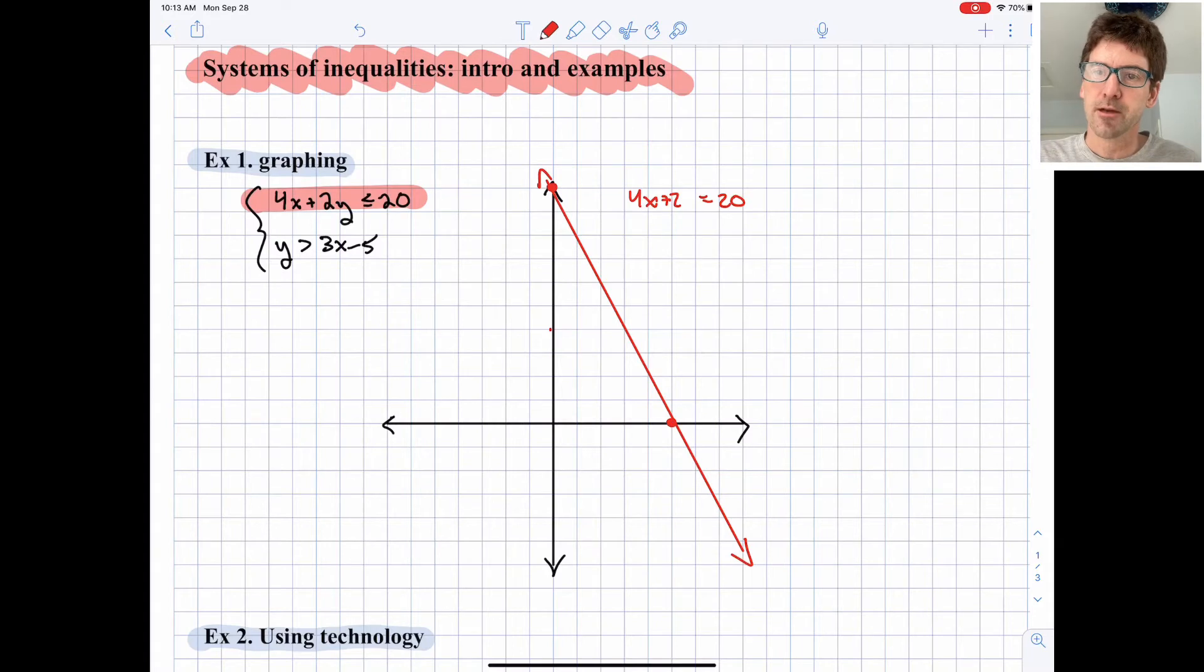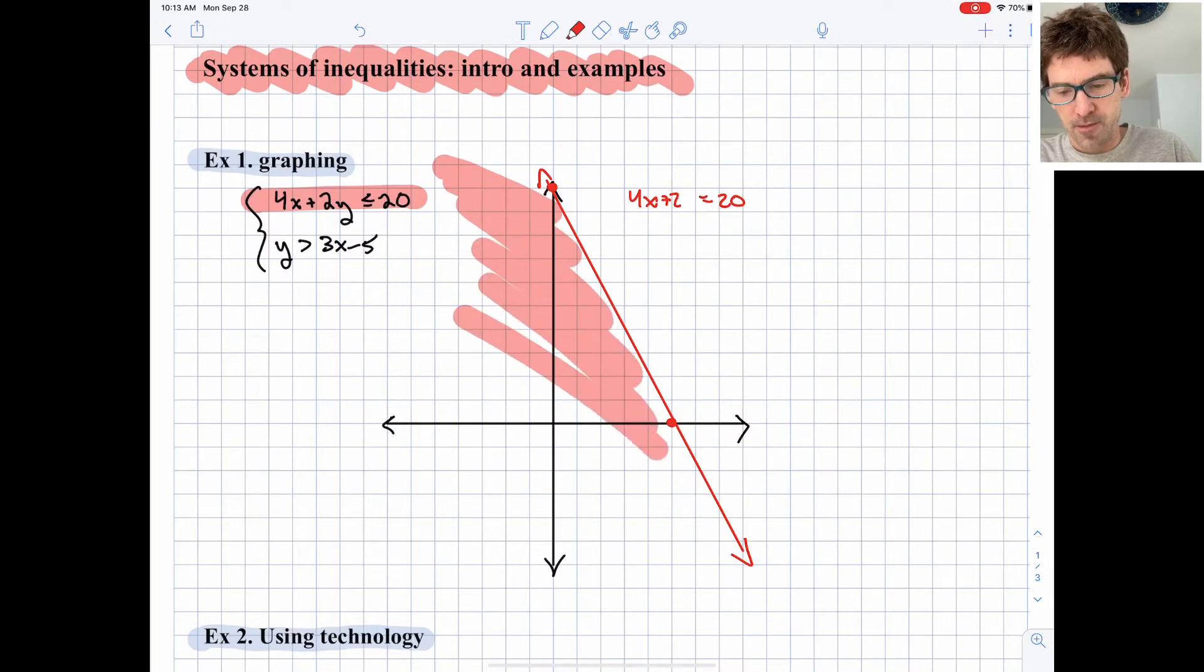We have to think about which side we're shading, the left side or the right side. I like to imagine plugging in the origin, the point (0, 0), and see if we get a valid inequality. In this case, is 4(0) + 2(0) ≤ 20? It definitely is. So we'll shade this side that includes (0, 0), the lower left side of the boundary line.